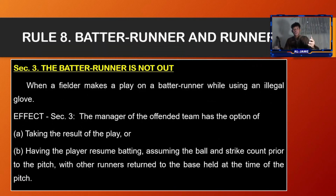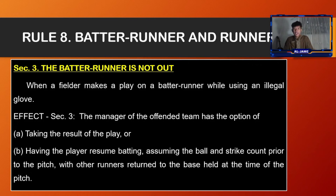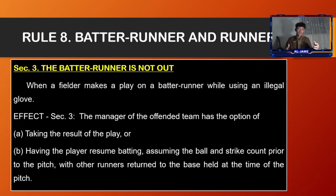Section number three, the batter-runner is not out when a fielder makes a play on a batter-runner while using an illegal glove. The manager of the offended team has the option of taking the result of the play, or having the player resume batting assuming the ball and strike count prior to the pitch, without the runners returning to the base held at the time of the pitch.